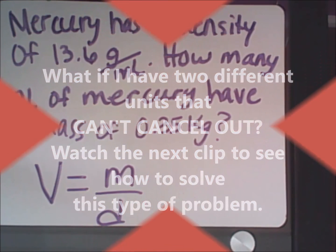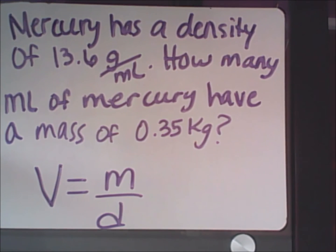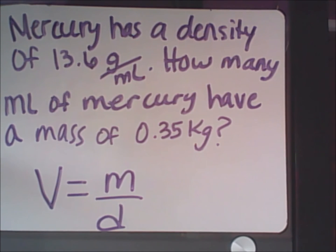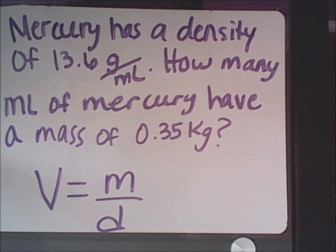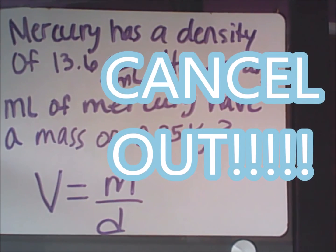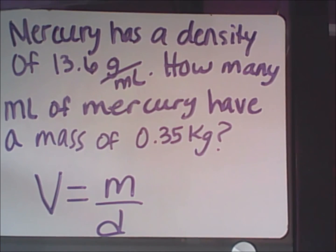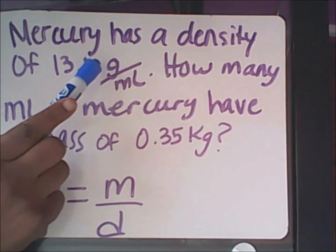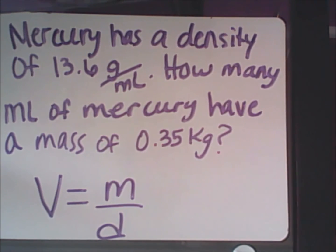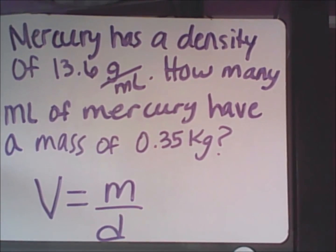Mercury has a density of 13.6 grams per milliliter. How many milliliters of mercury have a mass of 0.35 kilograms? One thing you must keep in mind is that your units must be the same in order for them to cancel out. If the units aren't the same, the problem is not going to work. Here you have a gram on the top for your density unit, you have kilograms for your mass. Those two units will not cancel out, so the first step you're going to have to do is convert.